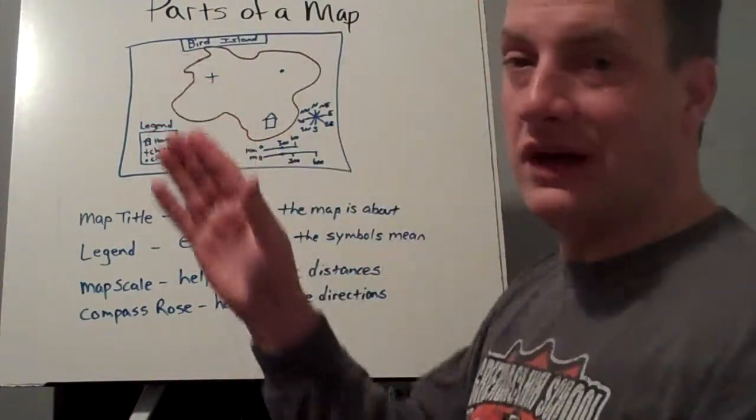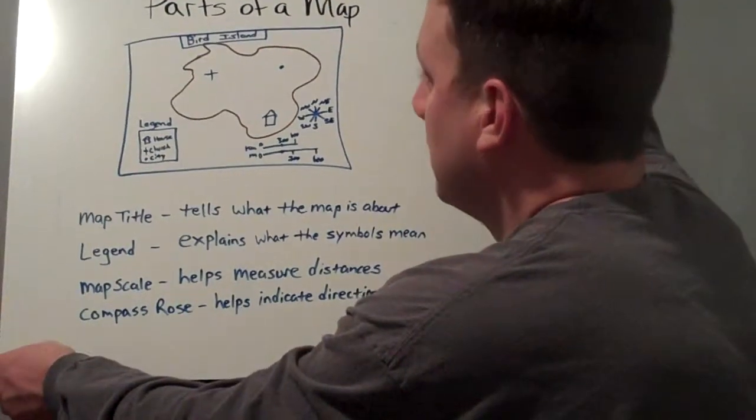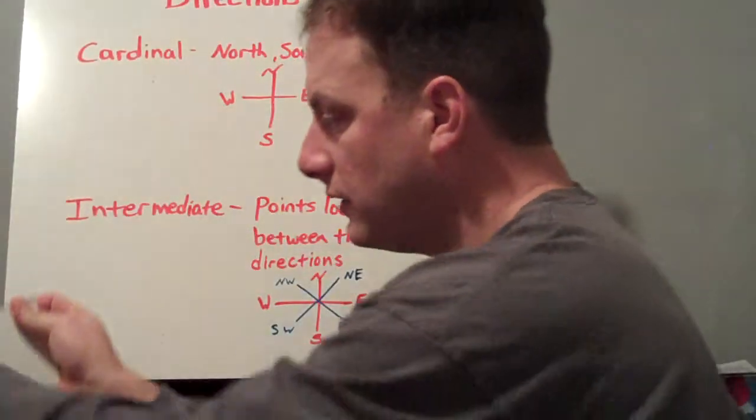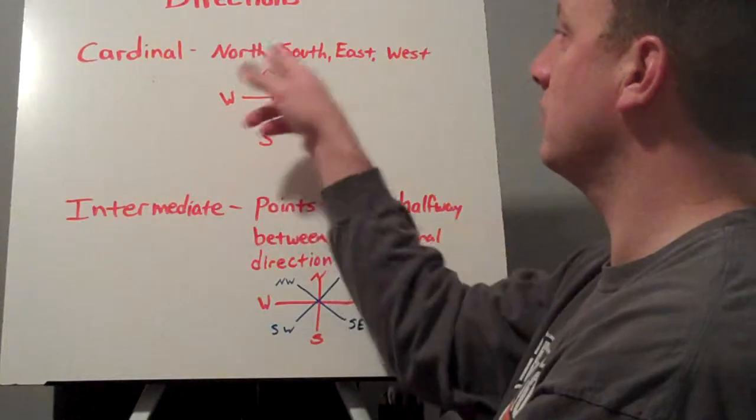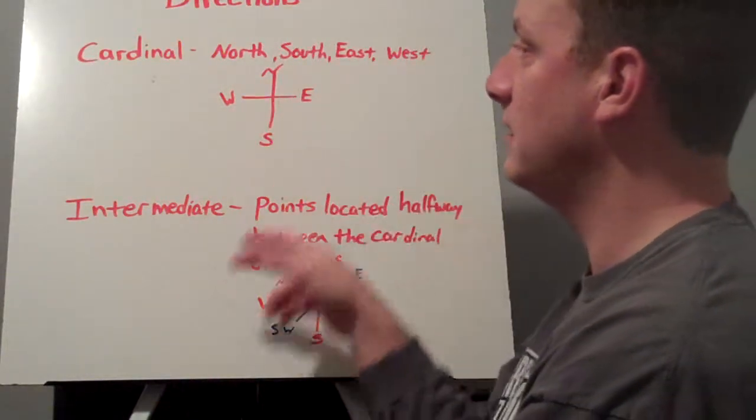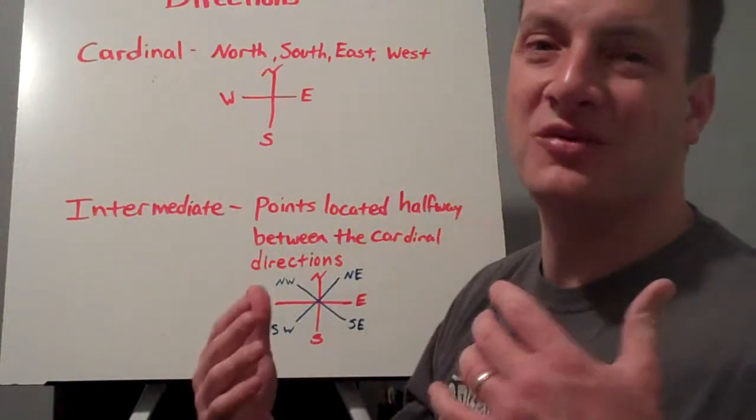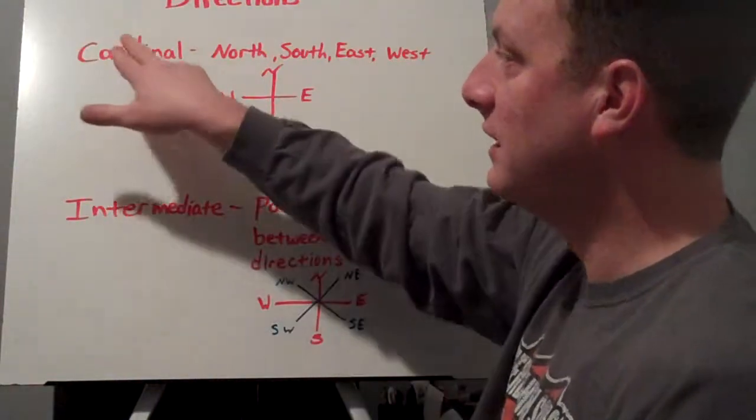Now let's talk about the next part. It's very important for us to remember our directions. We have cardinal directions, which are north and south, east and west. Somebody told me one time it's 'never eat soggy worms'—whatever works for you to help you remember. It's north, south, east, and west. These are cardinal directions.